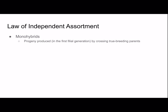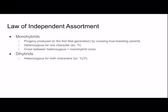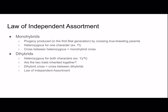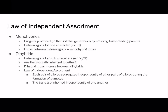Monohybrids are the progeny produced in the F1 generation by crossing two true-breeding parents — heterozygous for one character, for example height. A cross between monohybrids is called a monohybrid cross. Dihybrids are when an individual is heterozygous for both characters — in this case, pea color and height. You might wonder: are the two traits inherited together? We'll do a dihybrid cross to find out, which is a cross between dihybrids. By doing this cross, Mendel discovered the law of independent assortment — that each pair of alleles segregates independently of other pairs during the formation of gametes. The traits are inherited independently of one another.